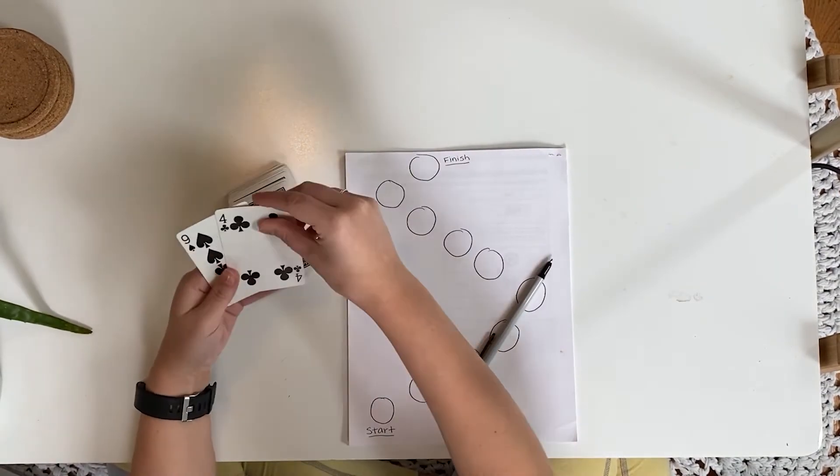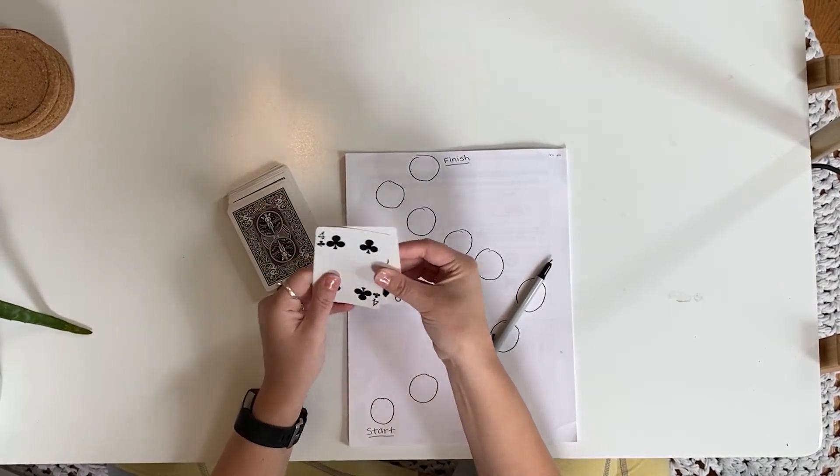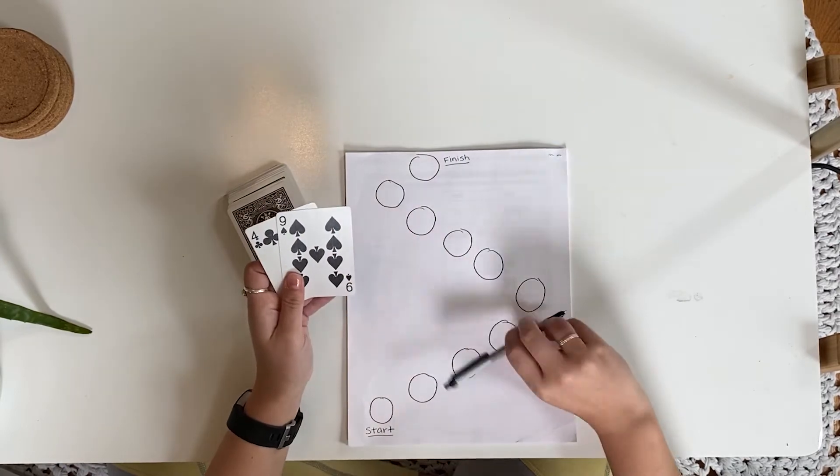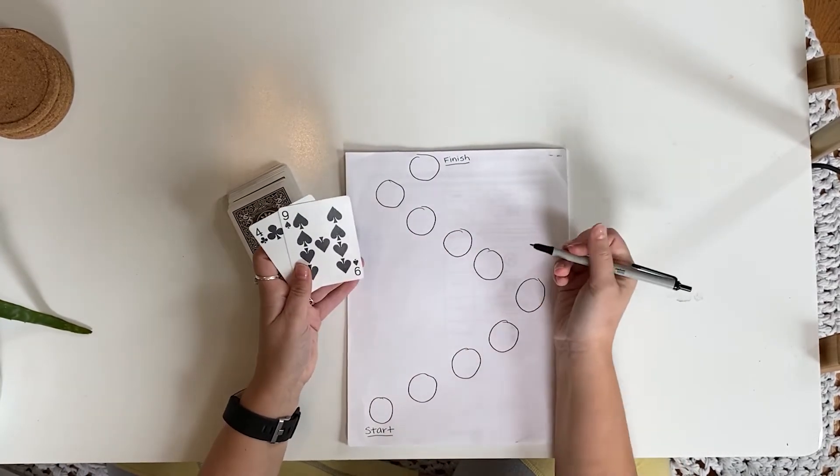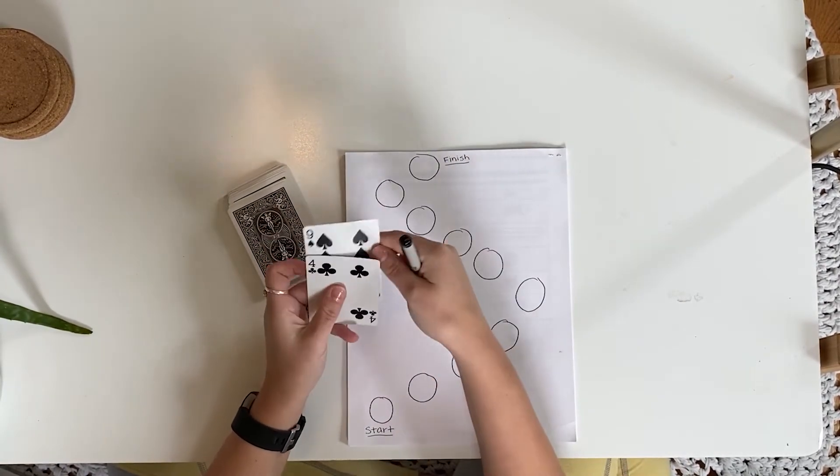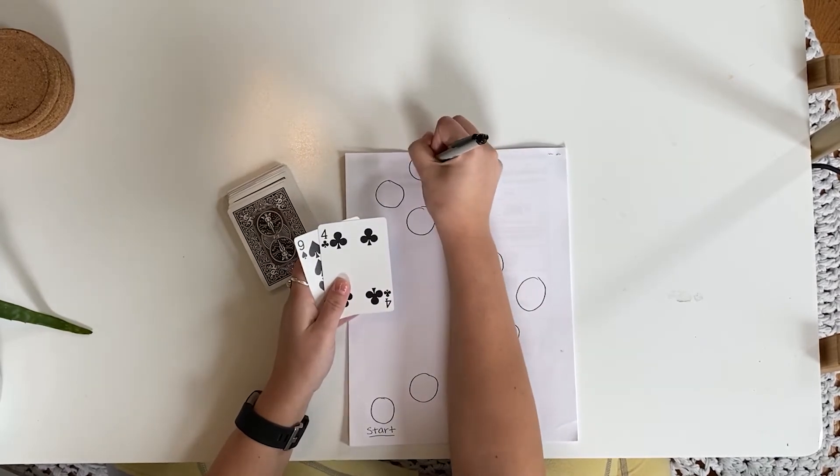To begin your turn, you must draw two cards. Then, with these two cards, decide which card goes in the ones place and which card goes in the tens place and place this resulting number on the path.